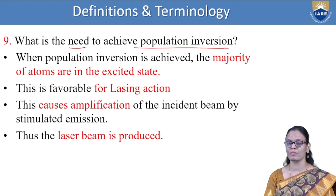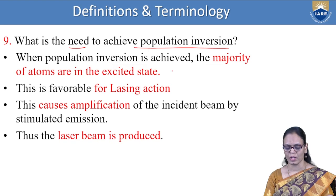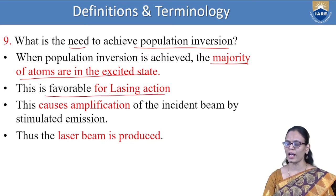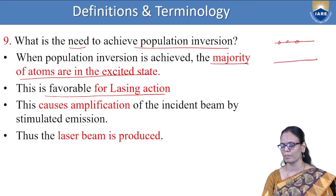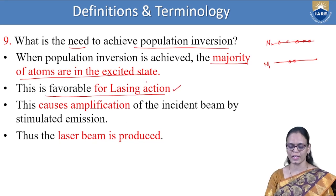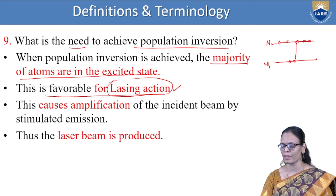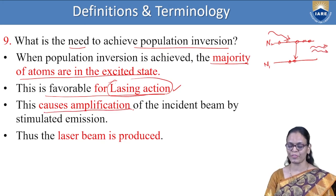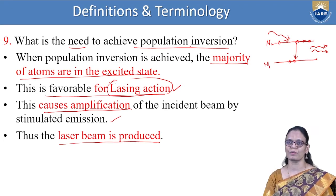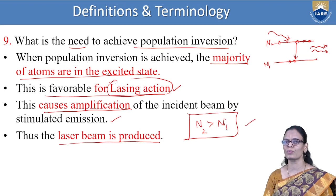Why do we need population inversion? When population inversion is achieved, the majority of atoms are in the excited state, which is favorable for lasing action. When N₂ is greater than N₁, when the electrons from the higher level come down by stimulated emission, they give rise to laser — causing amplification of the incident beam by stimulated emission. That is why we need population inversion; this condition must be satisfied for us to get laser.